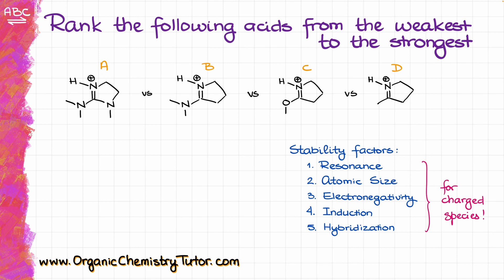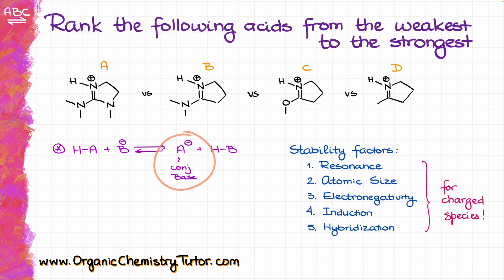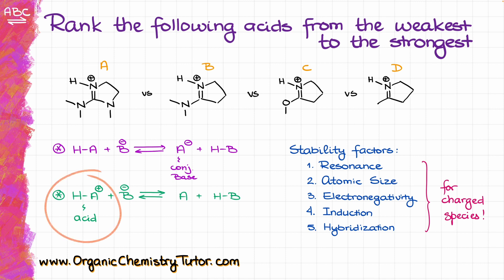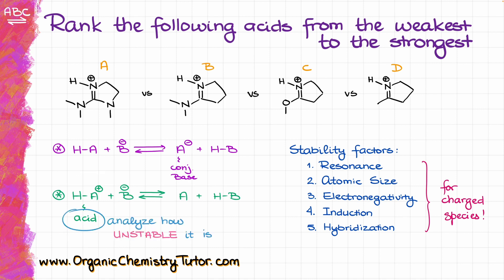These factors are only going to be relevant to the charged species. When it comes to the acid-base equilibrium there are two possible scenarios. In the first scenario we have our acid as a neutral species making a charged conjugate base — we look at the stability of the conjugate base. We can also have a scenario where the acid is charged and the conjugate base is uncharged.